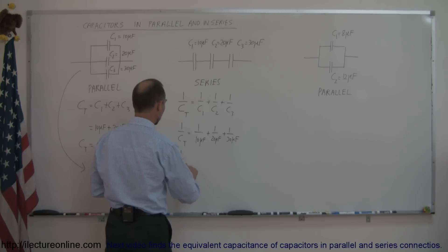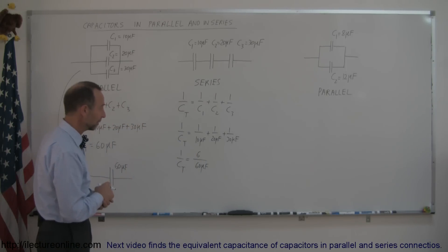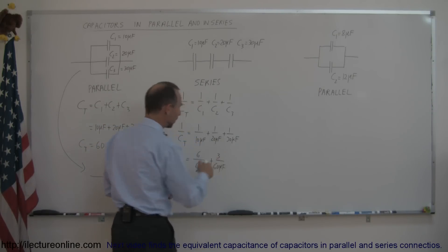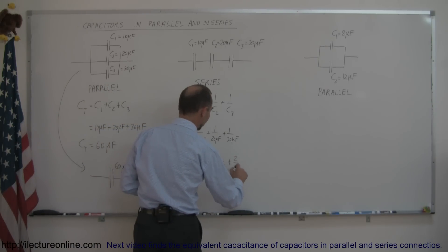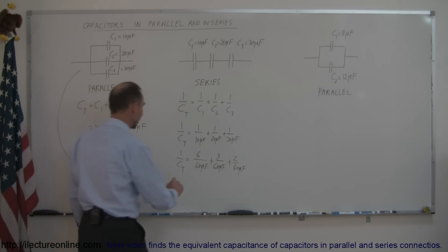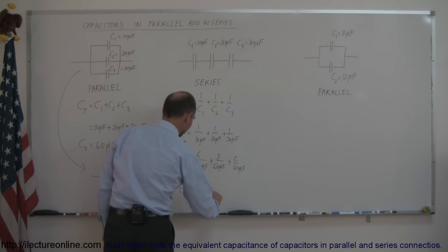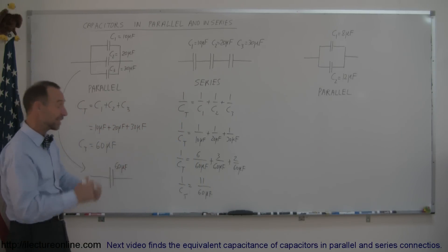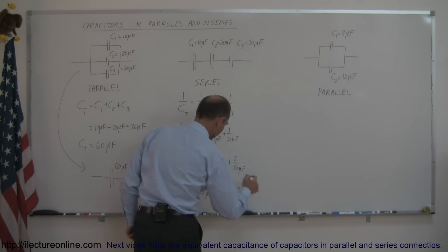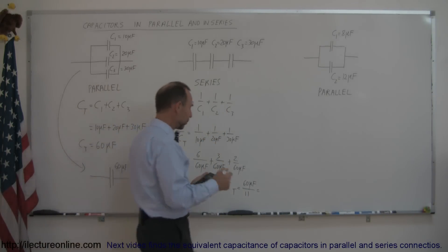Using 60 as the common denominator: 1/C_total = 6/60 µF + 3/60 µF + 2/60 µF. Adding 6, 3, and 2 gives 11, so 1/C_total = 11/60 µF. Solving for C_total by taking the inverse: C_total = 60/11 µF. Grabbing a calculator, 60 divided by 11 equals 5.5 microfarads.